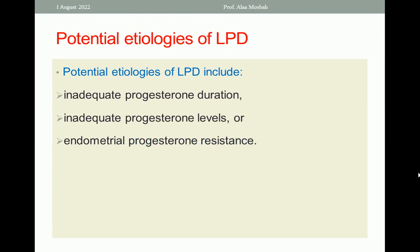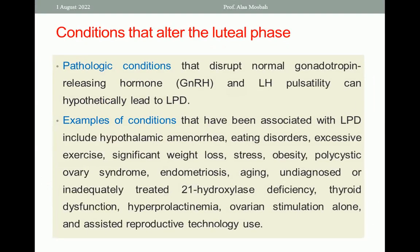What is the potential etiology of Luteal Phase Deficiency? It may be inadequate progesterone duration, or inadequate progesterone levels, or endometrial progesterone resistance. Any one of them can lead to Luteal Phase Deficiency. The pathologic conditions that disrupt normal gonadotropin-releasing hormone and LH pulsatility can hypothetically lead to Luteal Phase Deficiency.